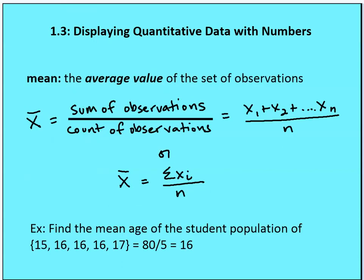This should be a review for you. Mean is going to be the average value of a set of observations. It's represented mathematically as the x-bar symbol. We're going to take the sum of the observations — x sub 1 plus x sub 2, and so on through x sub n — adding the sum of those values and then dividing by the count.